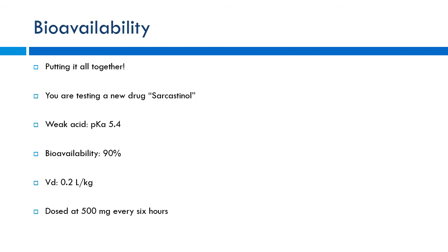So putting it all together, let's say we have a new drug called Sarcastinol — it's going to help us with people who might be overly sarcastic. Let's say it's a weak acid with a pKa of roughly 5.4, a bioavailability of roughly 90%, a volume of distribution of 0.2 liters per kilogram, and we normally dose 500 milligrams every six hours. We're going to keep these variables in mind as we go forward and work on some of these problems.